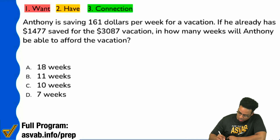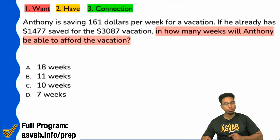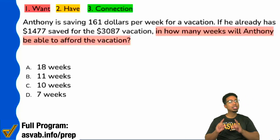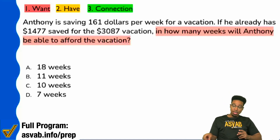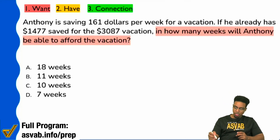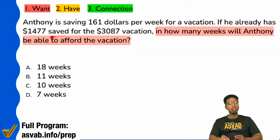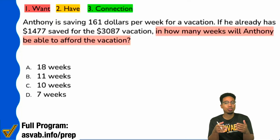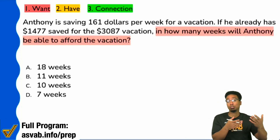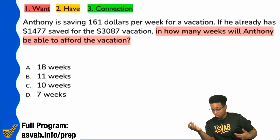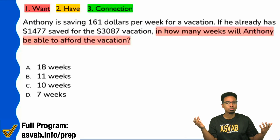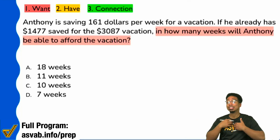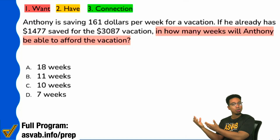It's going to say right here: 'In how many weeks will Anthony be able to afford the vacation?' Notice that that is not the beginning of the question sentence. The sentence begins with 'if he already has $1,470' — that doesn't matter. Whenever they say the word 'if,' they're just giving you additional information. So they're saying, hey, if he already has this much saved for the vacation that costs this much, that's not the goal. That's not telling me the goal. I'm going to address that as extra information that's connected to the goal because the word 'if' is clearly telling me it's connected.